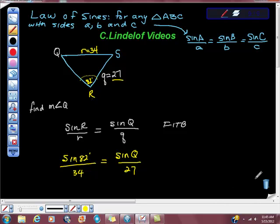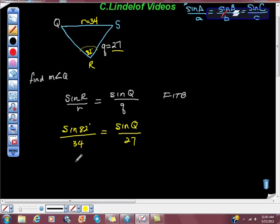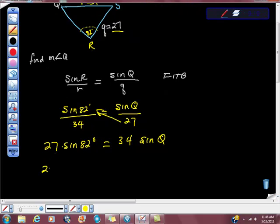So I'm going to do a little cross multiplying. We're going to get 27 times sine of 82 degrees is equal to 34 sine of angle Q. I'm going to divide both sides by 34, and we get 27 sine 82 degrees over 34 is equal to sine of Q.